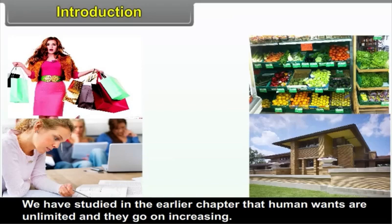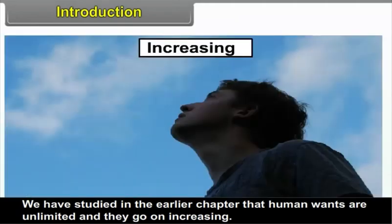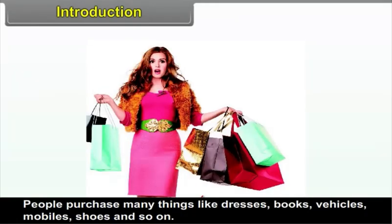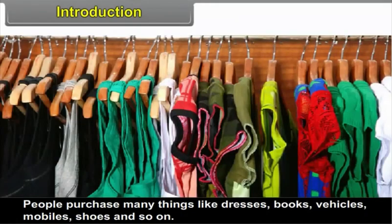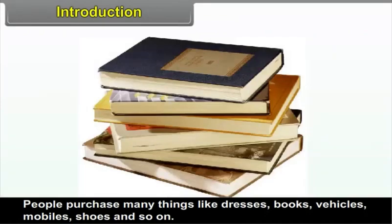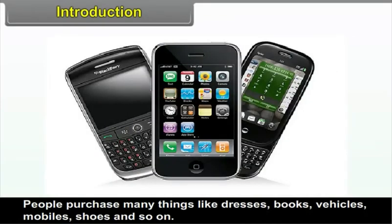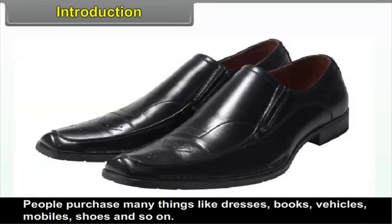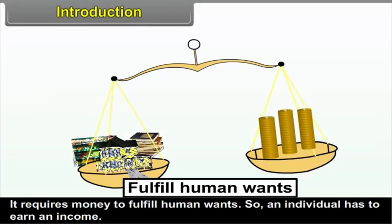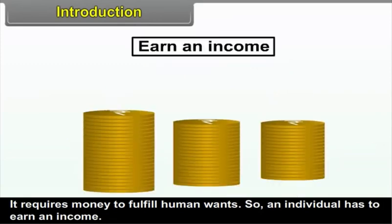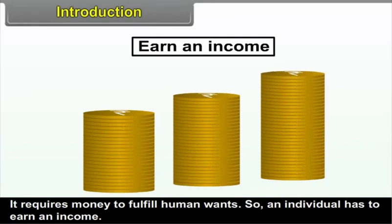3.1 Introduction. We have studied in the earlier chapter that human wants are unlimited and they go on increasing. People purchase many things like dresses, books, vehicles, mobiles, shoes, and so on. It requires money to fulfill human wants, so an individual has to earn an income.